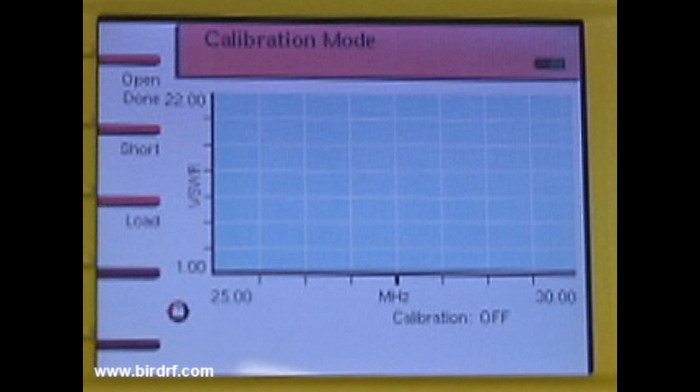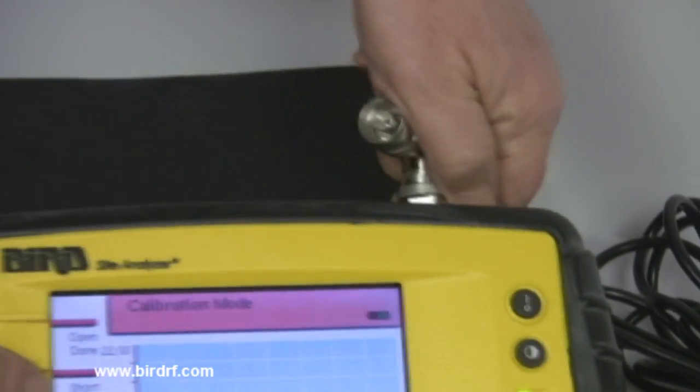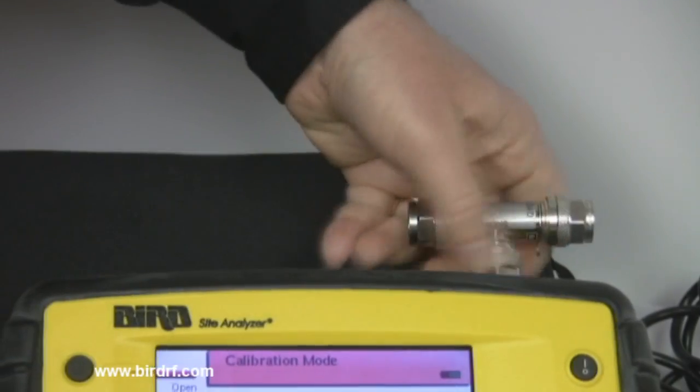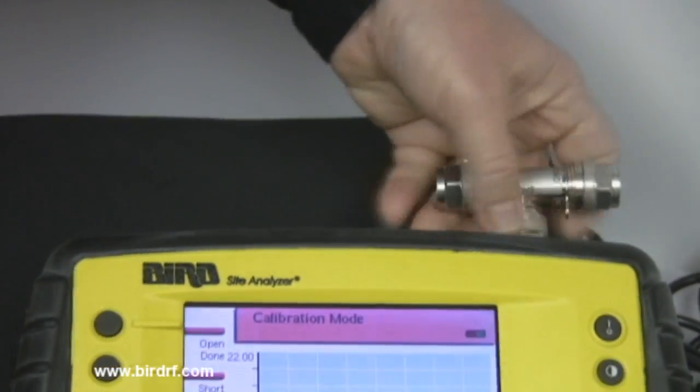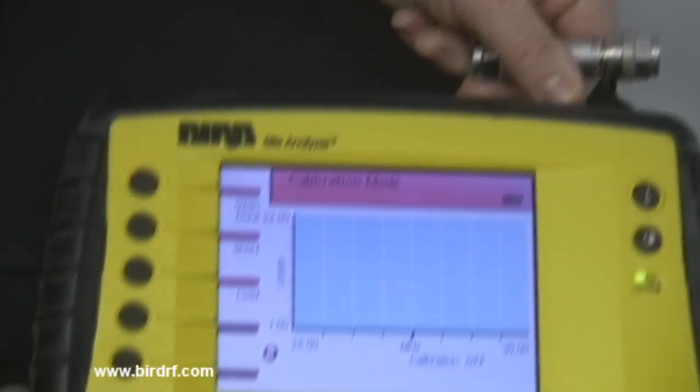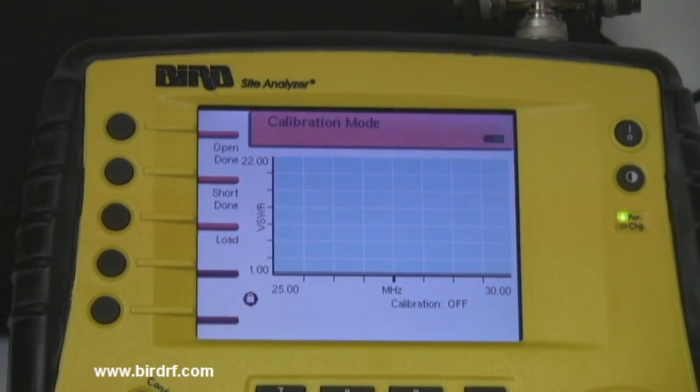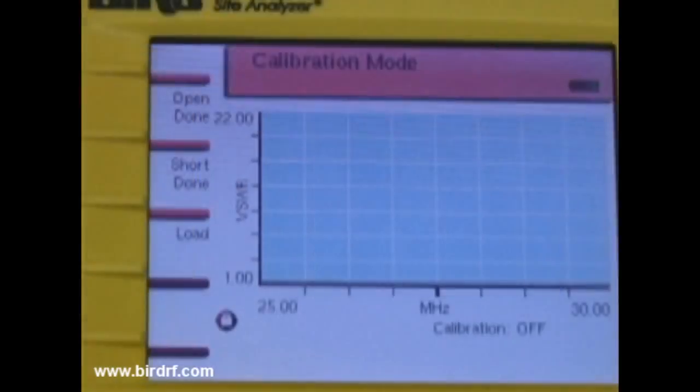Step two is to make the short calibration. Remove the cal combo from the SA and reconnect using the short connector located in the middle of the cal. Then press the short button which is located under the open button on the left hand side of the screen. Wait for the done indication. Again, this is the notification that the calibration using the short has been completed.